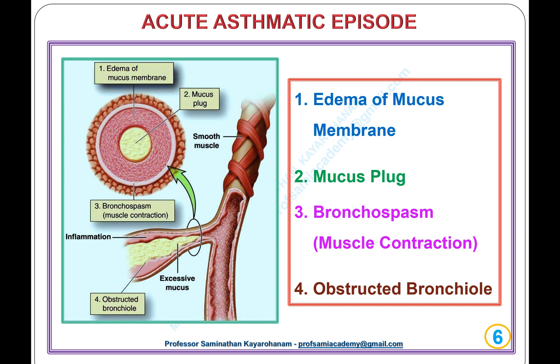Acute asthmatic episode involves four components: 1. Edema of the mucous membrane. 2. Mucous plug. 3. Bronchospasm with muscle contraction. 4. Obstructed bronchial airways.